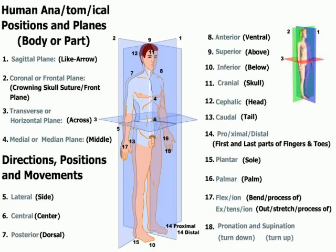Number eleven, cranial pertains to the skull. Number twelve, cephalic pertains to the head. Number thirteen, caudal pertains to the tail. An example of twelve and thirteen together would be the cephalocaudal sequence of development of the human body, from the head to the tail.